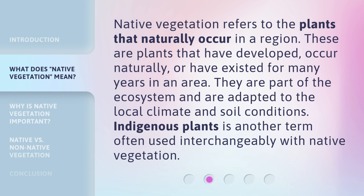Native Vegetation refers to the plants that naturally occur in a region. These are plants that have developed, occur naturally, or have existed for many years in an area. They are part of the ecosystem and are adapted to the local climate and soil conditions. 'Indigenous Plants' is another term often used interchangeably with Native Vegetation.